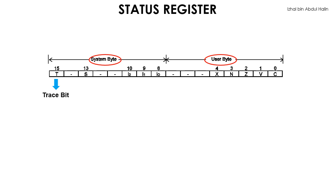Bit 13 is the supervisor state bit. By default, it is set to 0, such that you may use the 68k microprocessor as a normal user. You also have the option to program this bit to 1. Doing so will allow you to use the microprocessor in the supervisor mode. In supervisor mode you would have more options for programming the 68k microprocessor, such as executing program tracing, as mentioned earlier.